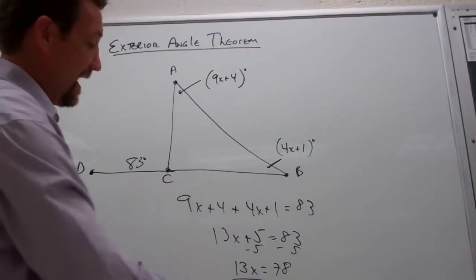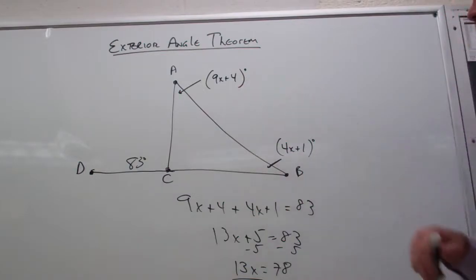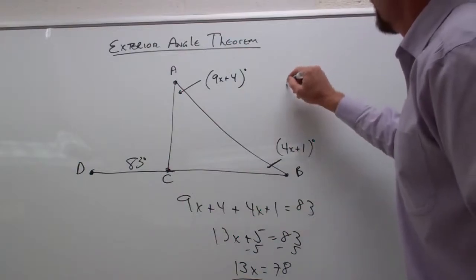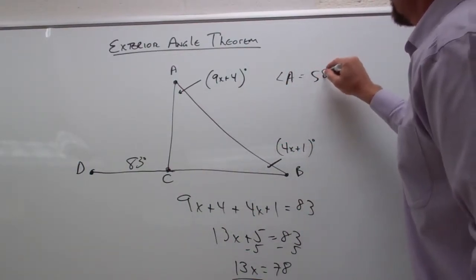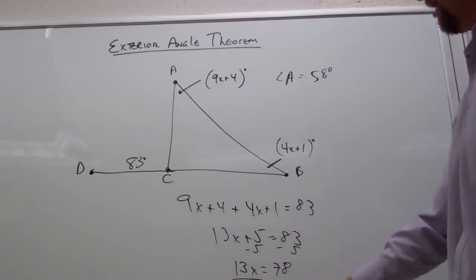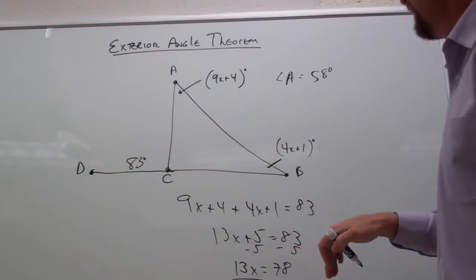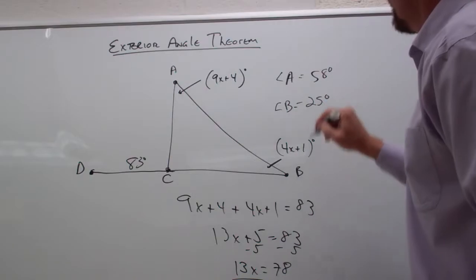So now we know that x is 6. We can plug 6 into either of these. 9 times 6 is 54 plus 4. So angle A is going to be 58 degrees. And if we plug in the 6 here, 4 times 6 is 24 plus 1. Angle B would be 25 degrees.